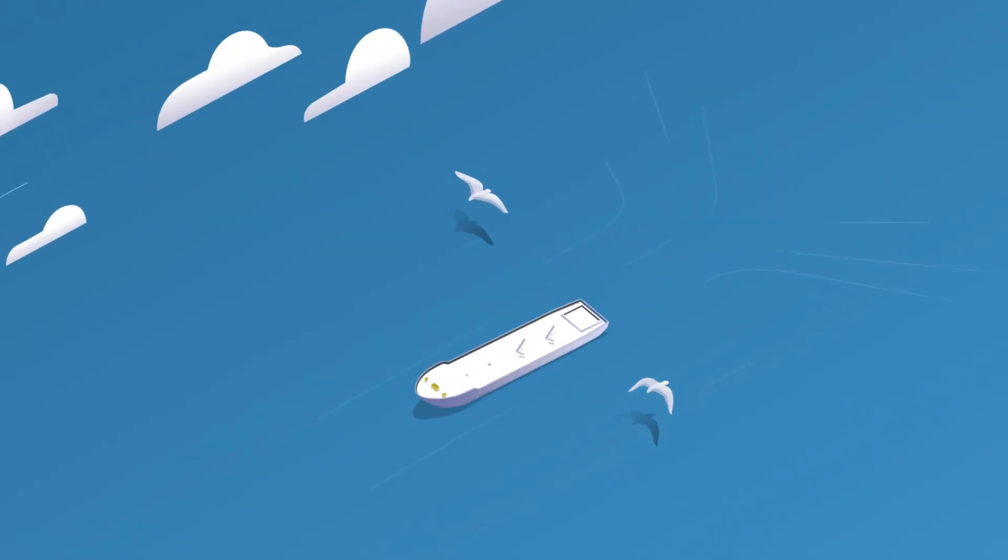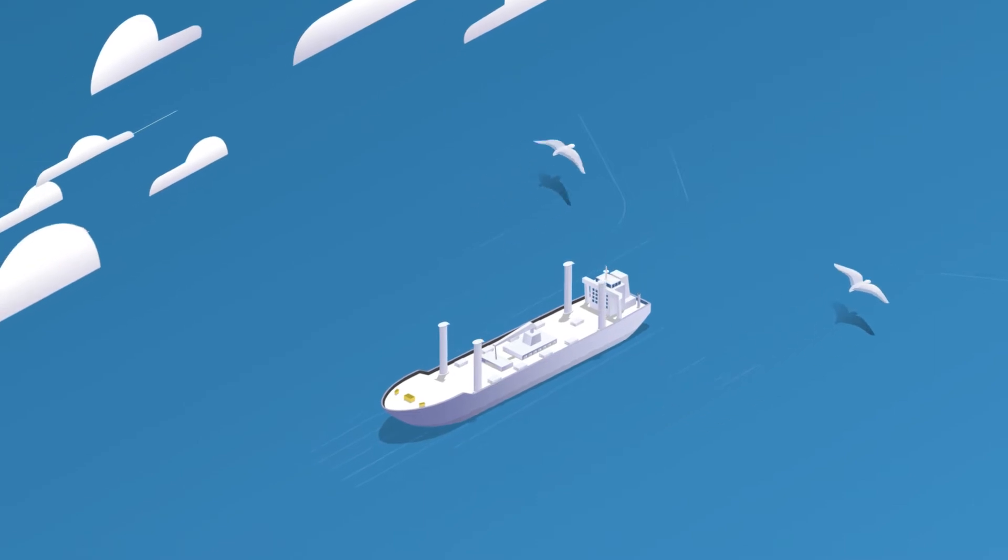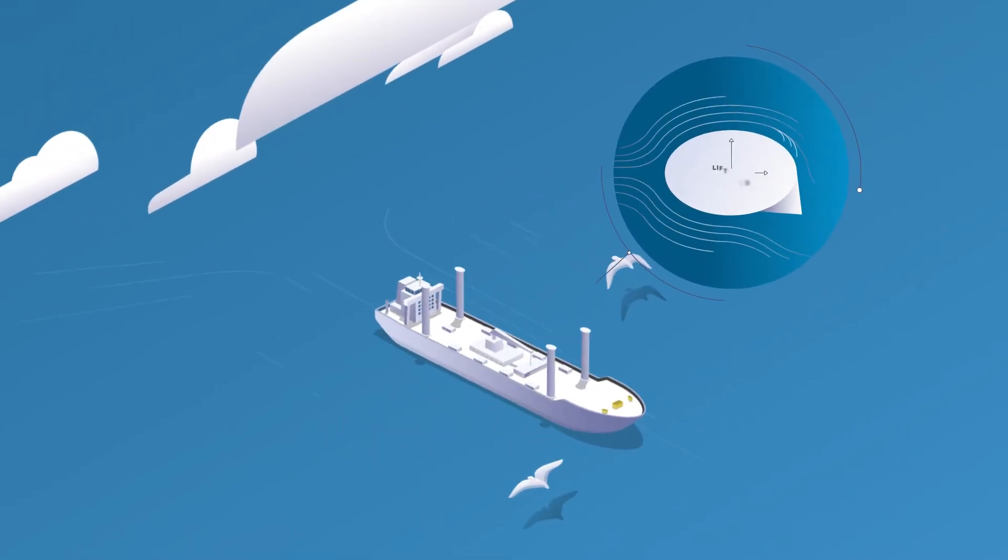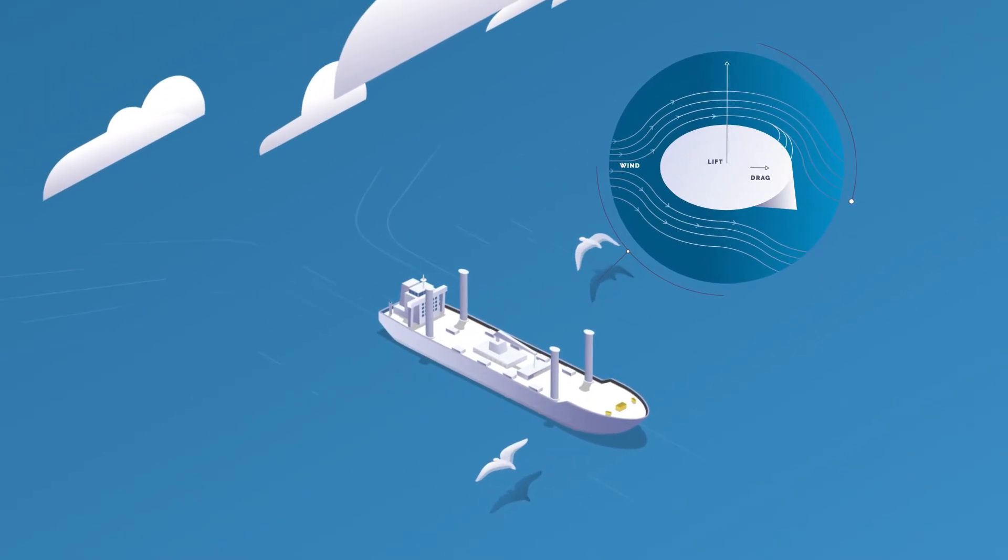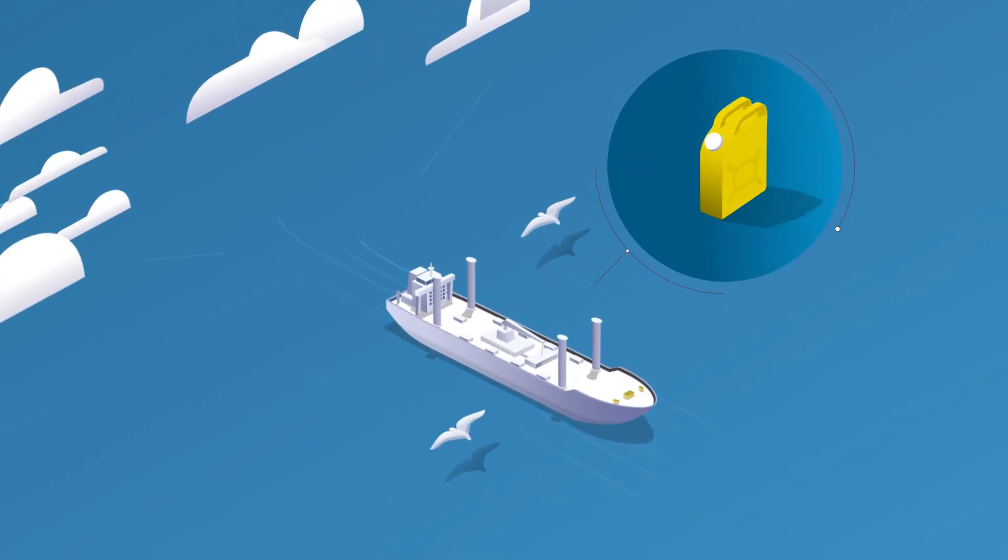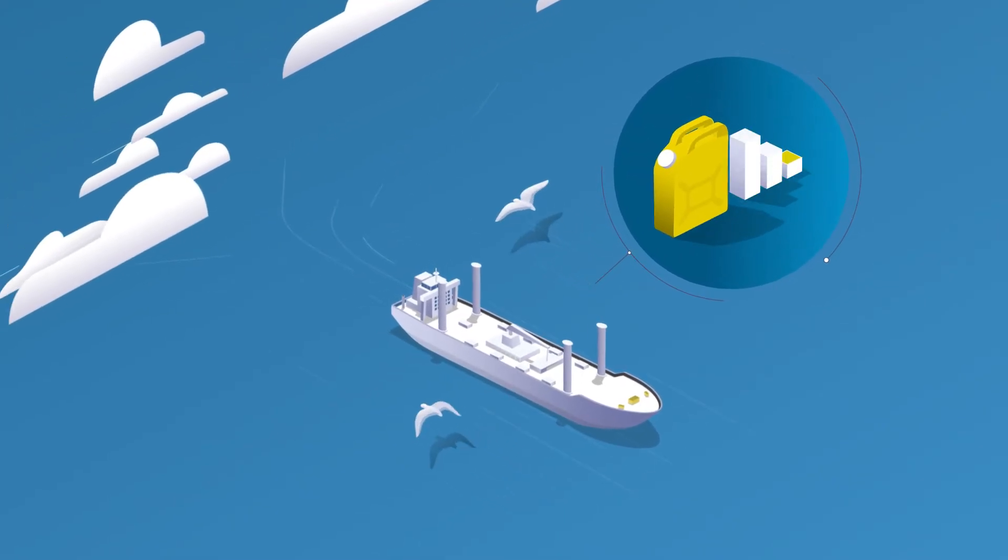The e-sail by Bound for Blue is the sail of the 21st century. An autonomous wind propulsion system that generates up to 7 times more lift than a conventional airplane wing, reducing fuel use and emissions.